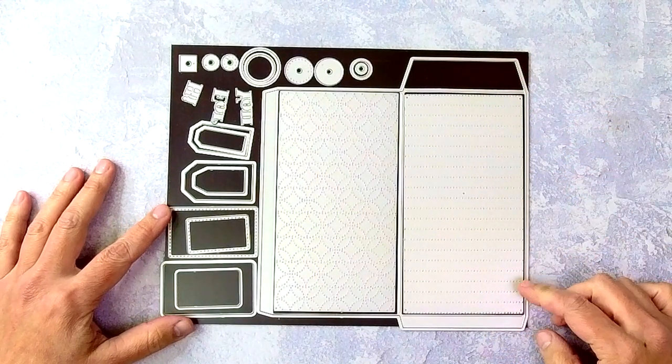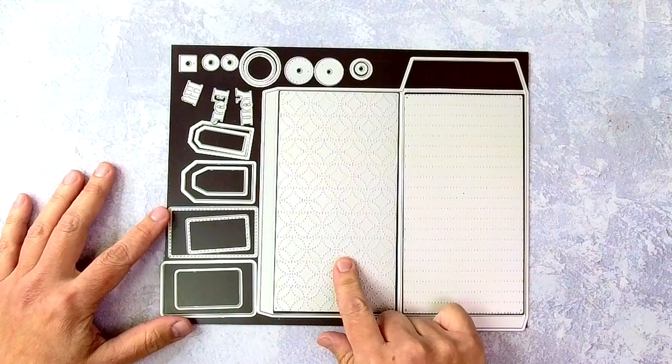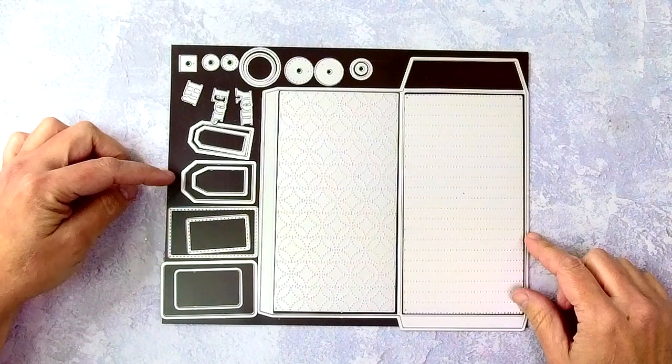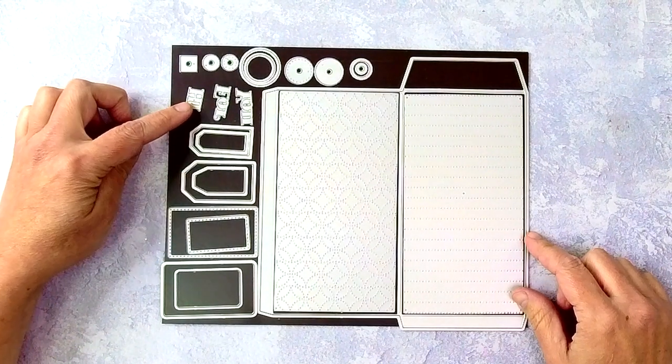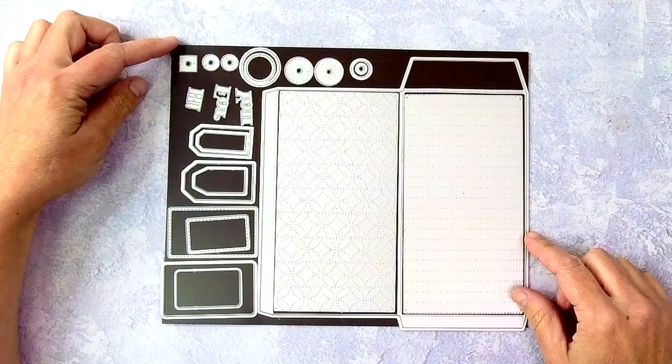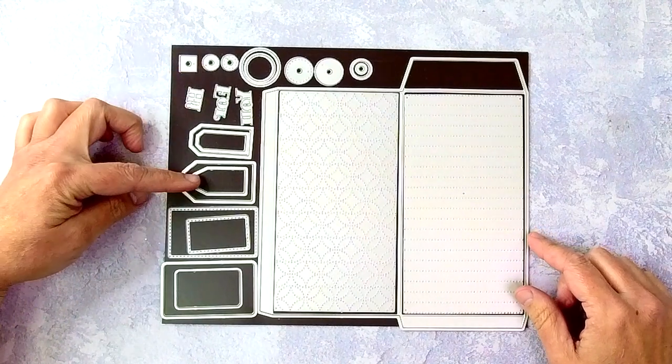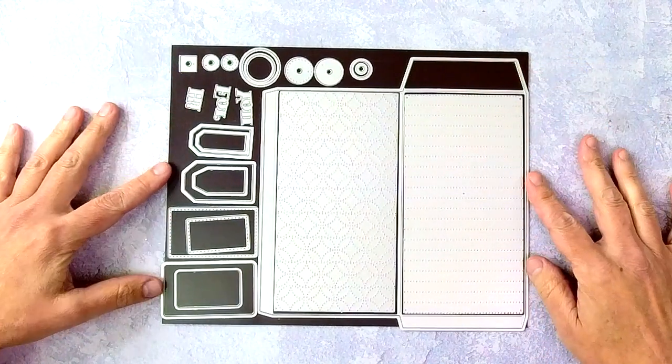We've also got a really great add-on this month, the mini slimline envelope builder die set. This has texture plates and labels, as well as tags, small word dies, and embellishments so that you can step all of your tags and envelopes up for either mailing or hand delivery.